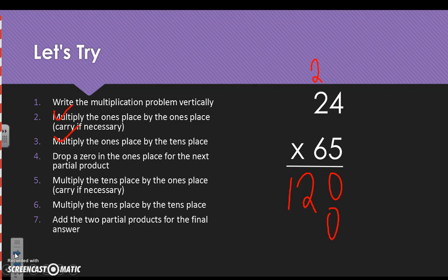We need to drop a 0 in the place for our partial product. Now we multiply the tens times the ones. 6 times 4 is 24, carry the 2, drop the 4. 6 times 2 is 12, plus 2 more is equal to 14. Now these two partial products we need to add them. So 0 and 0 is 0, 2 and 4 is 6, 1 and 4 is 5, and we bring down that 1. So our final answer is 1,560 for this problem.